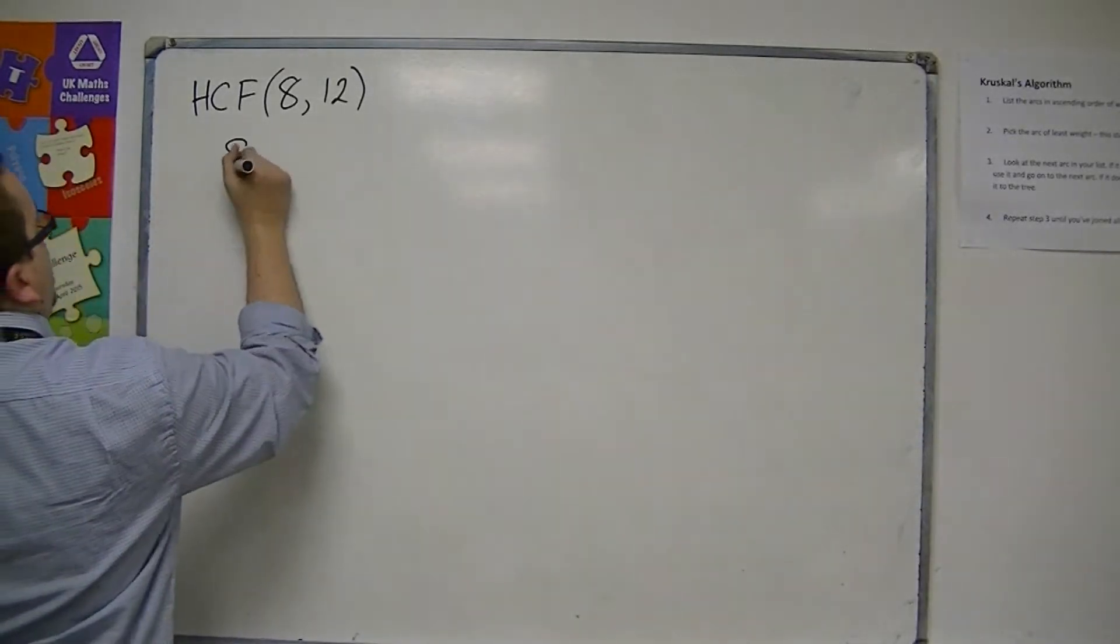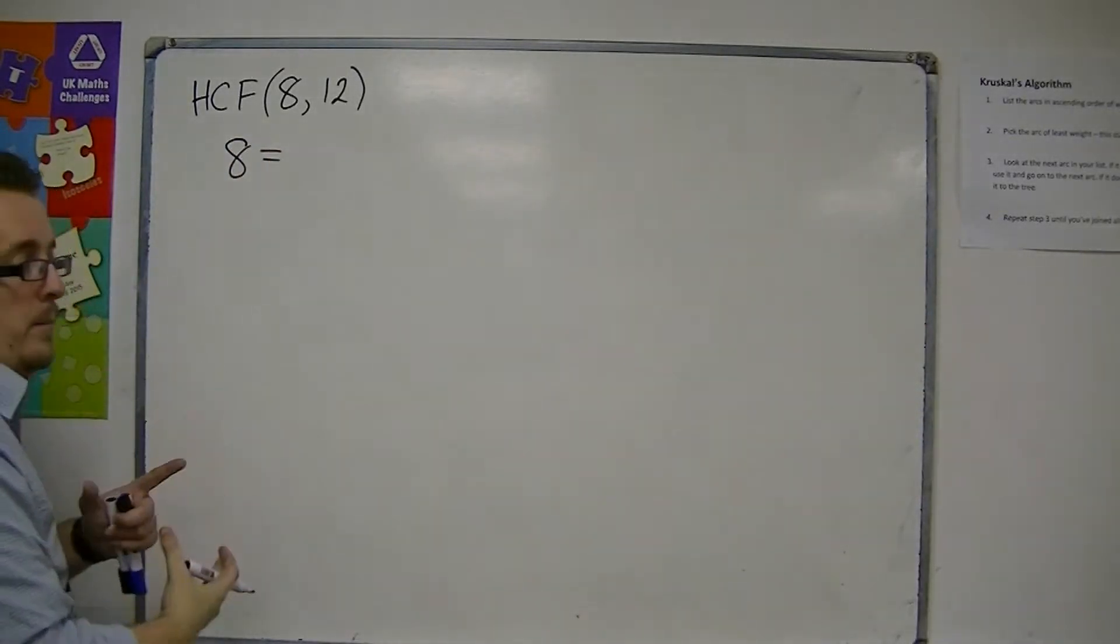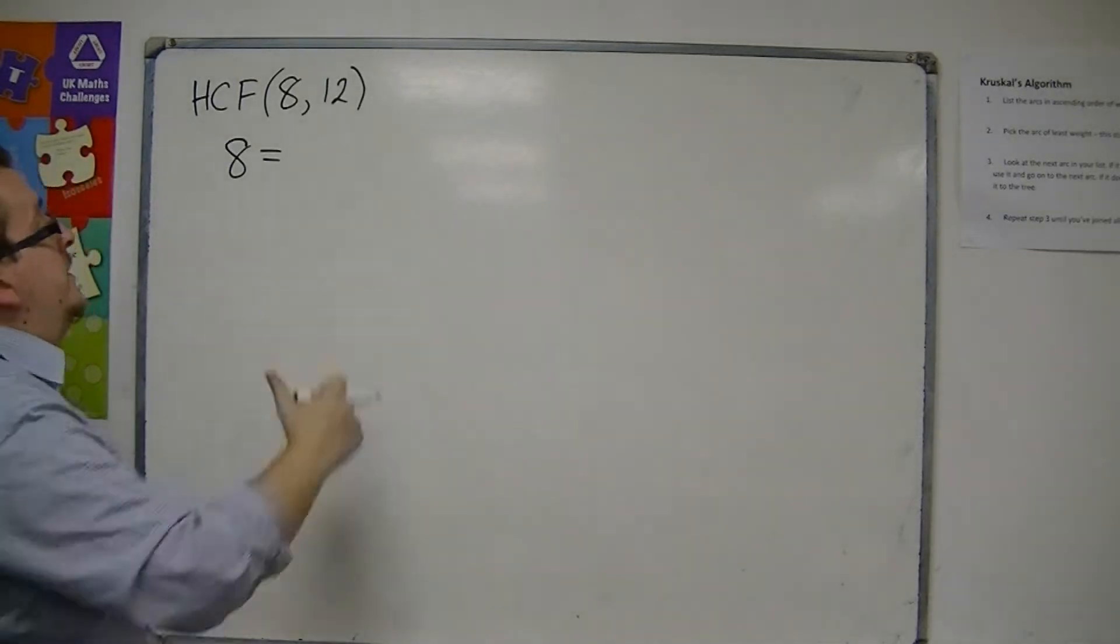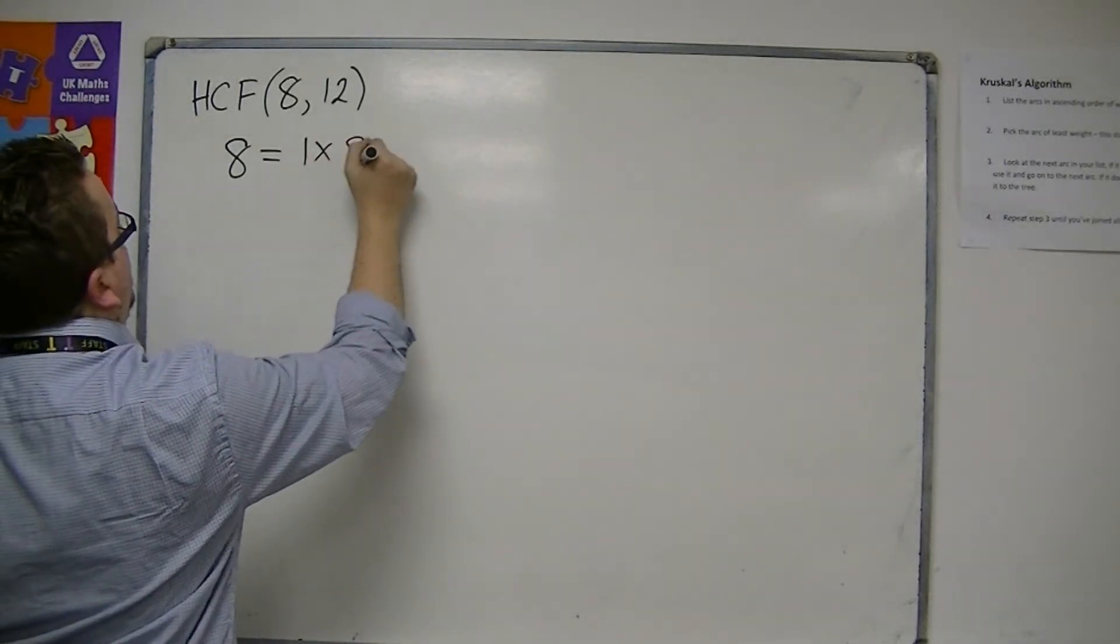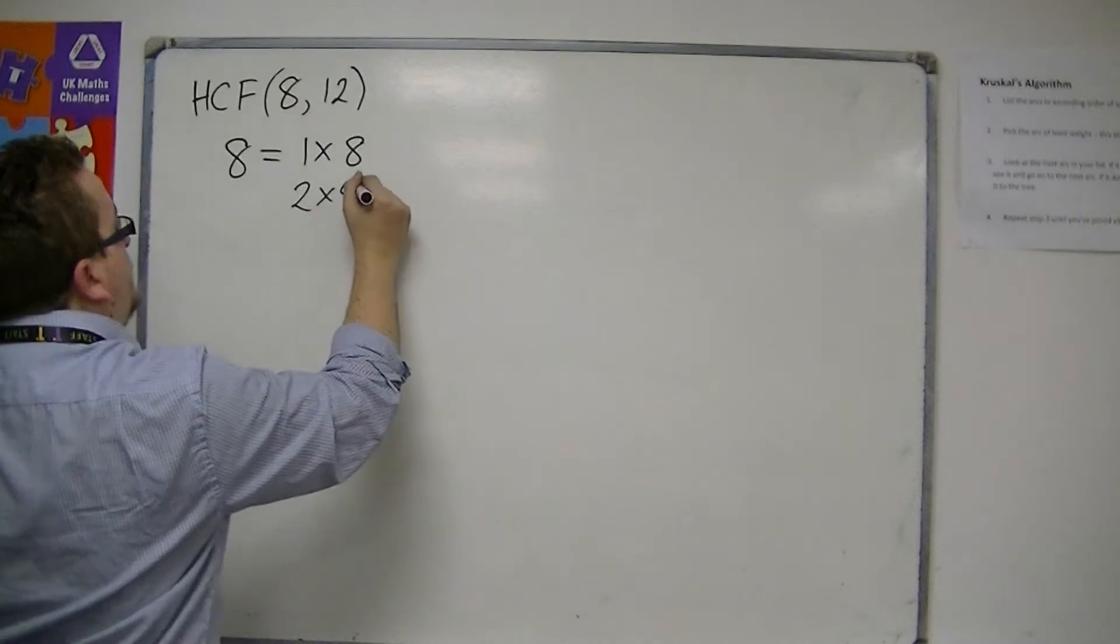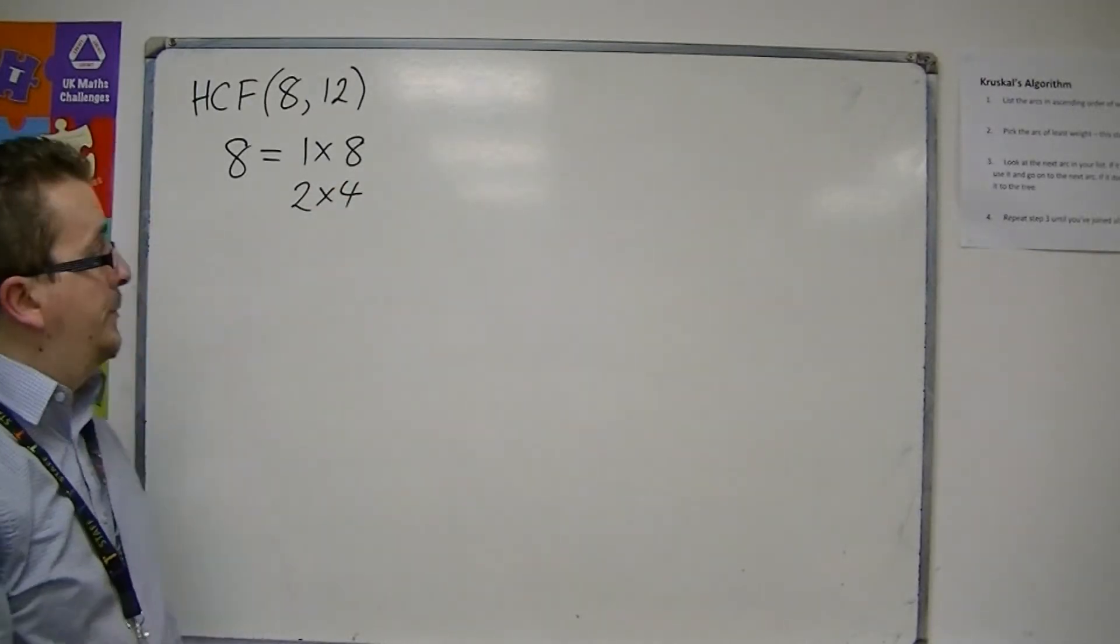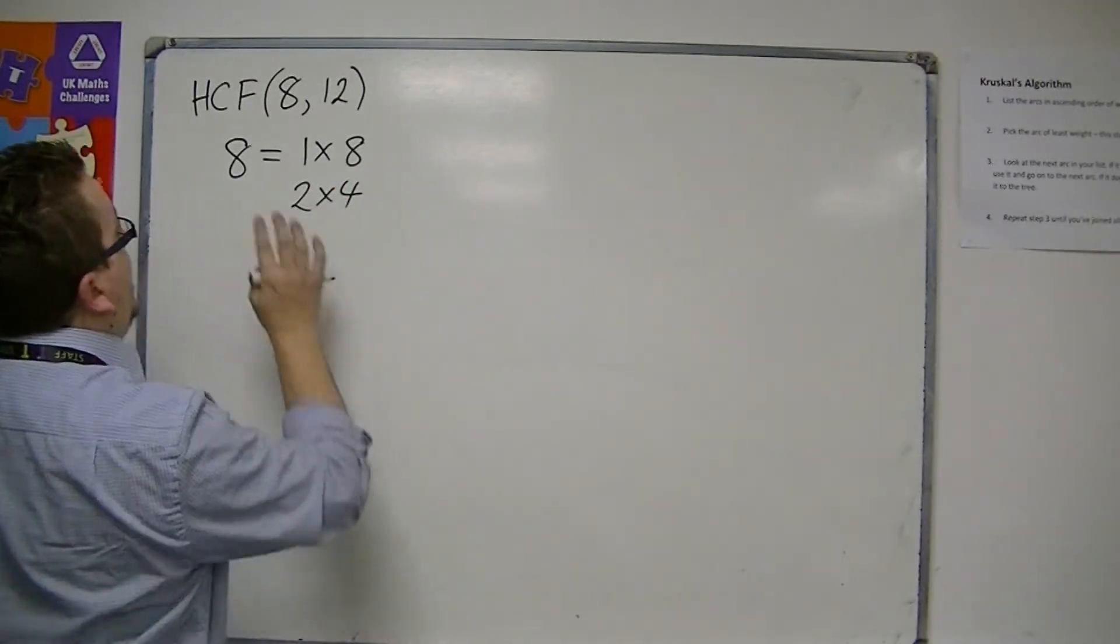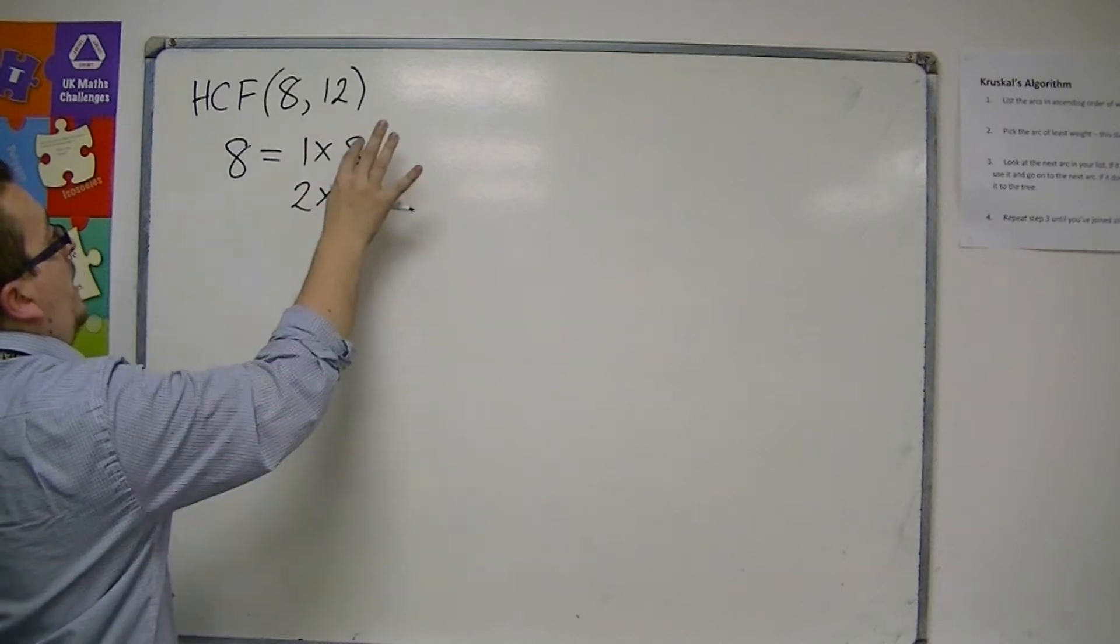The factors of 8 can be found by finding numbers that multiply together to make 8, such as 1 and 8, and 2 and 4. And remember, we don't go into decimals. The factors of 8 are 1, 2, 4, and 8.